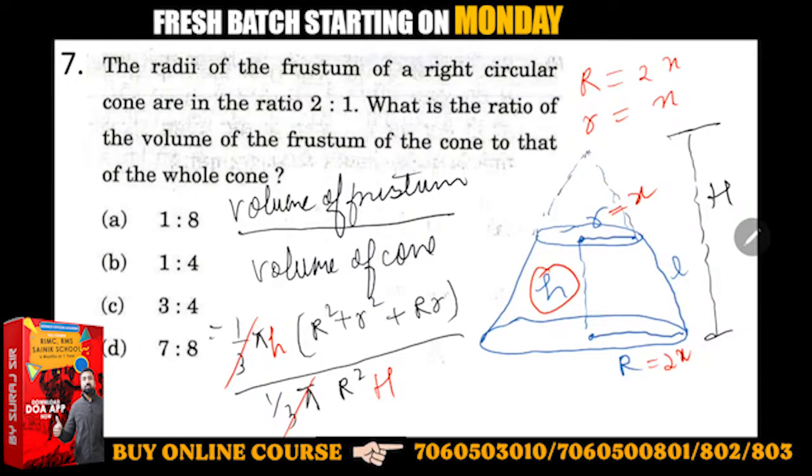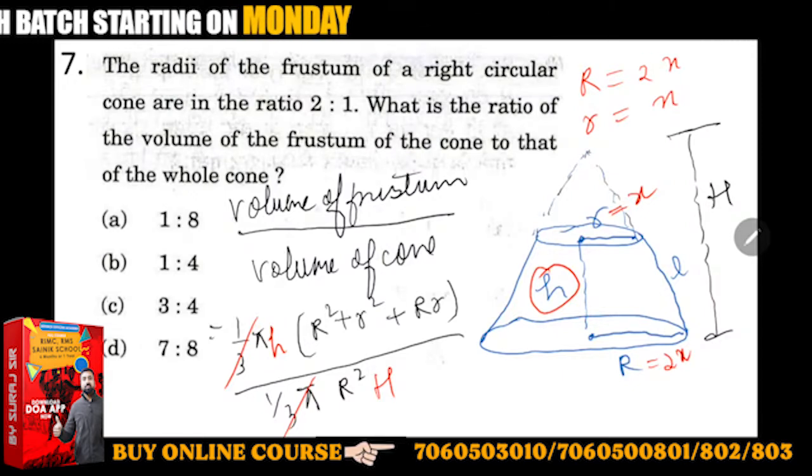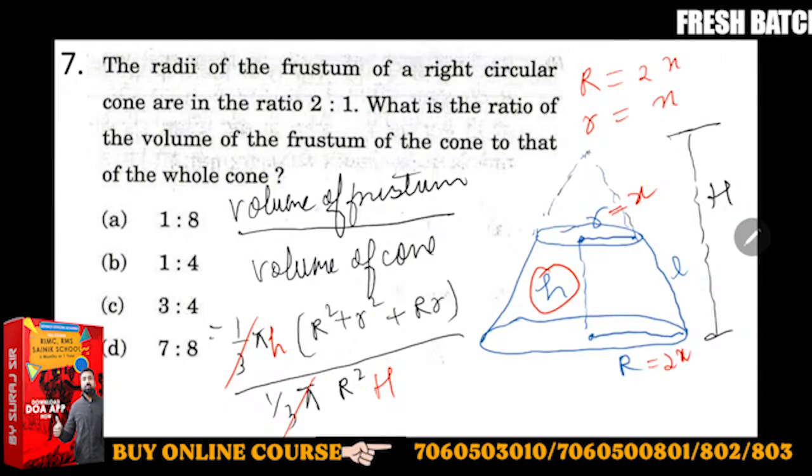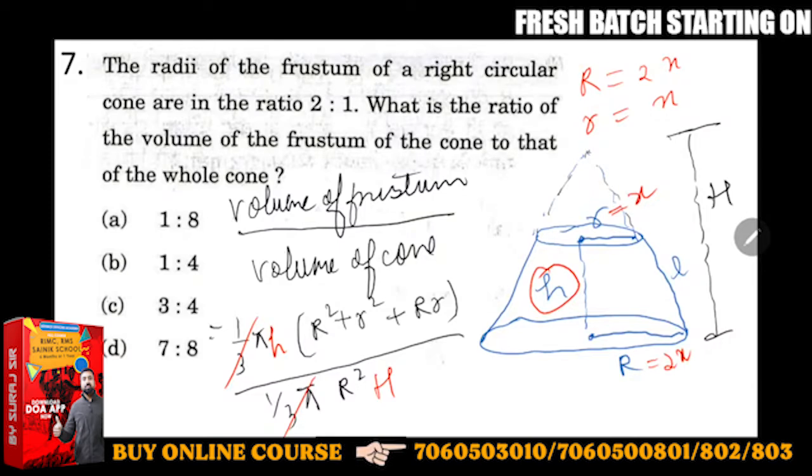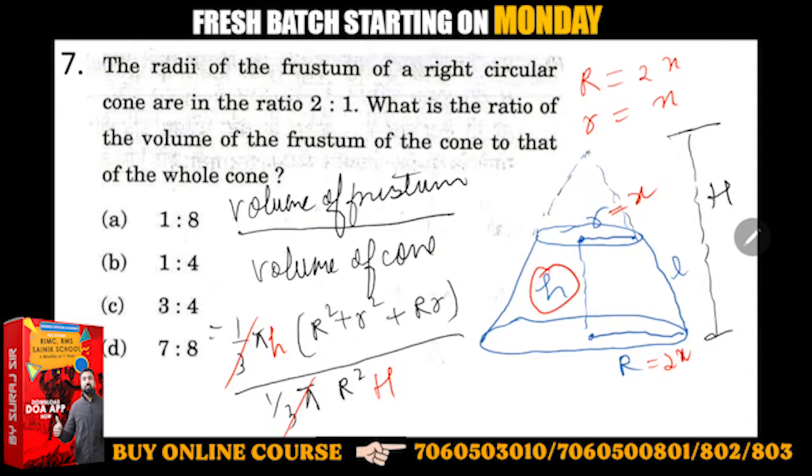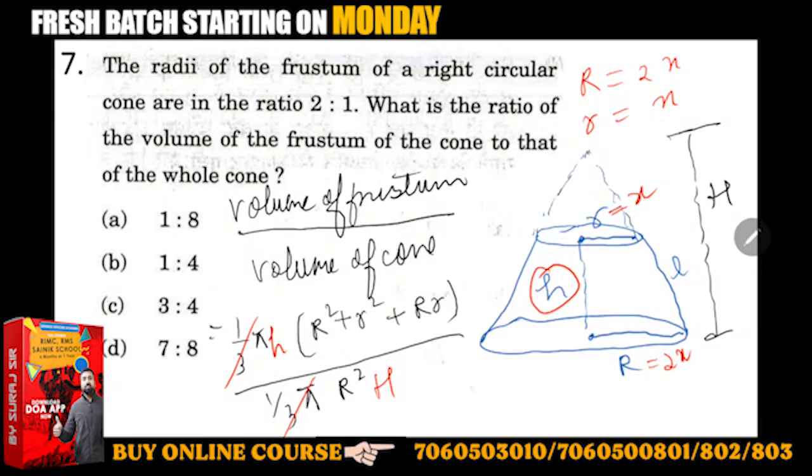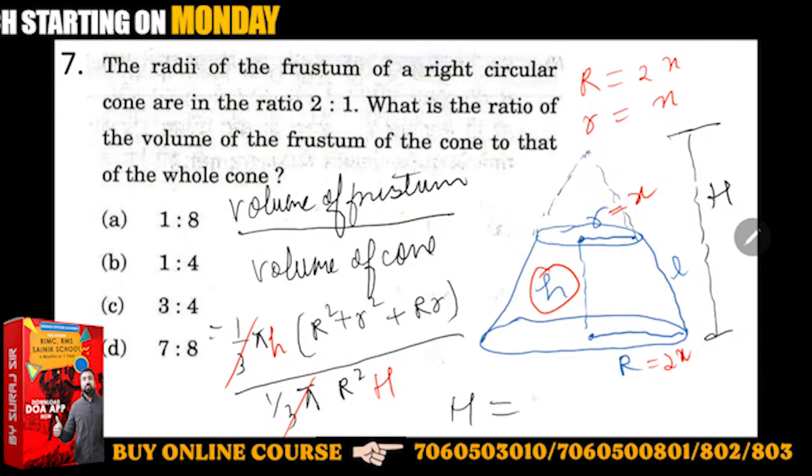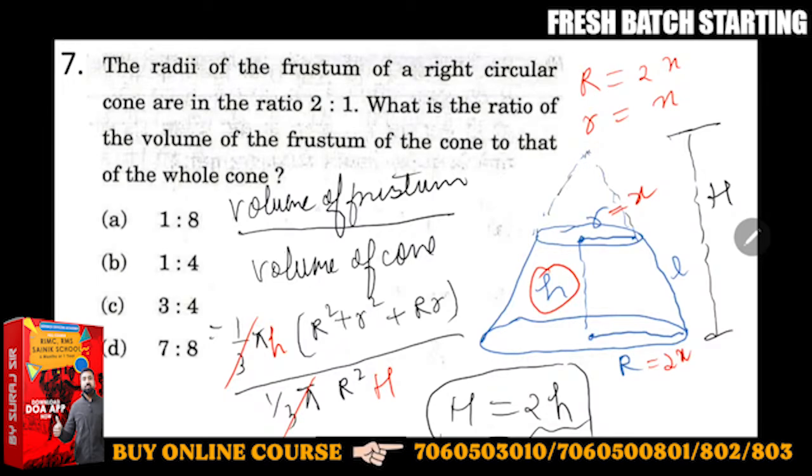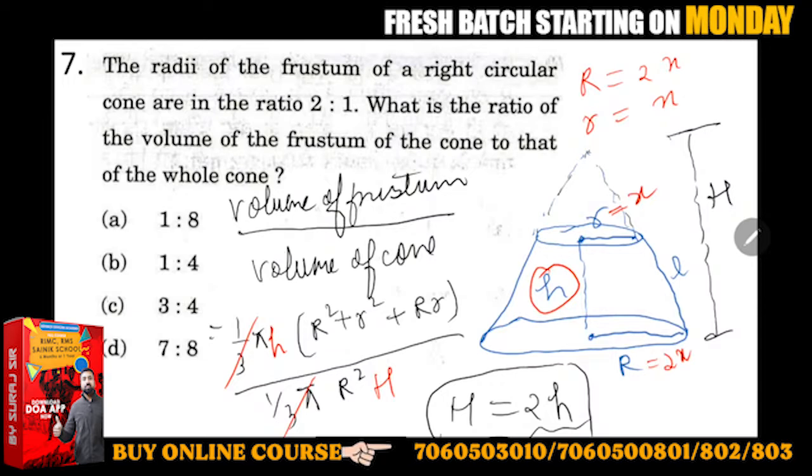Now you have to remember one very important thing. The radius of the frustum is given in ratio 2:1, meaning the bigger radius is double the smaller one. When radius is double, you should also know that capital H will be twice small h. This concept you should know. Sony is saying 7:4 - that's not in the options.